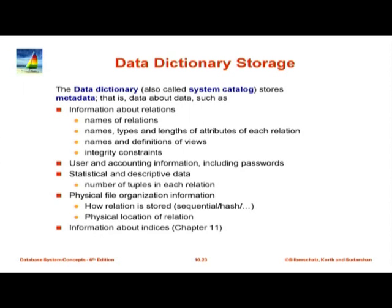There is also data dictionary storage, also called the system catalog, which stores all the metadata. This is very important — we have stored data on disk, and to read data from a relation, we need to know where on disk that data is. The data dictionary has names of relations, names, types, and lengths of attributes, names and definitions of views, integrity constraints, user names and passwords, and statistical data for query optimization — such as how many tuples are in each relation, distribution of values, and number of distinct values.